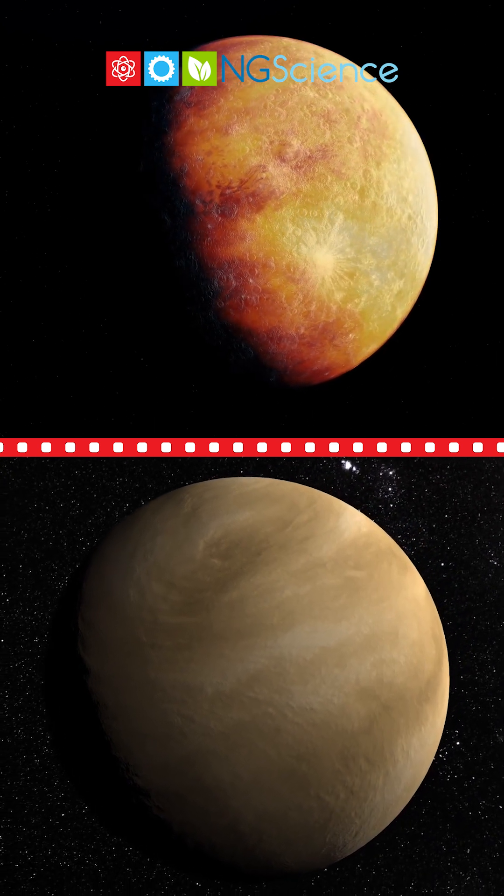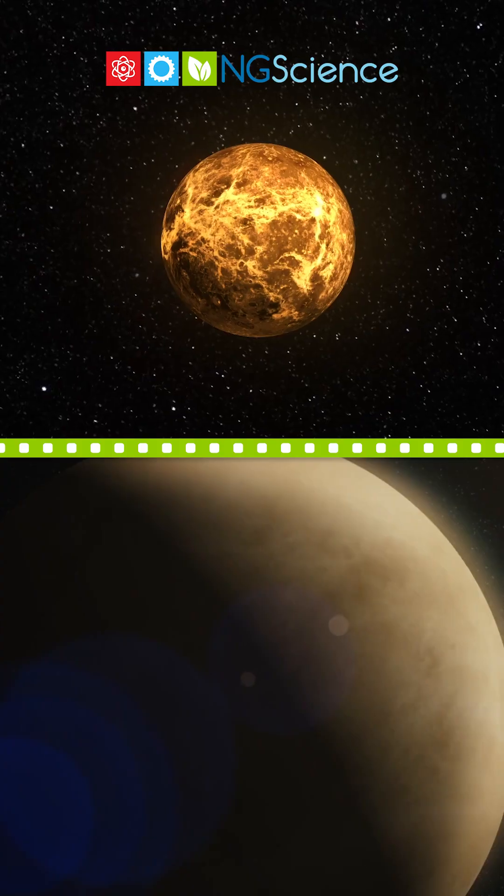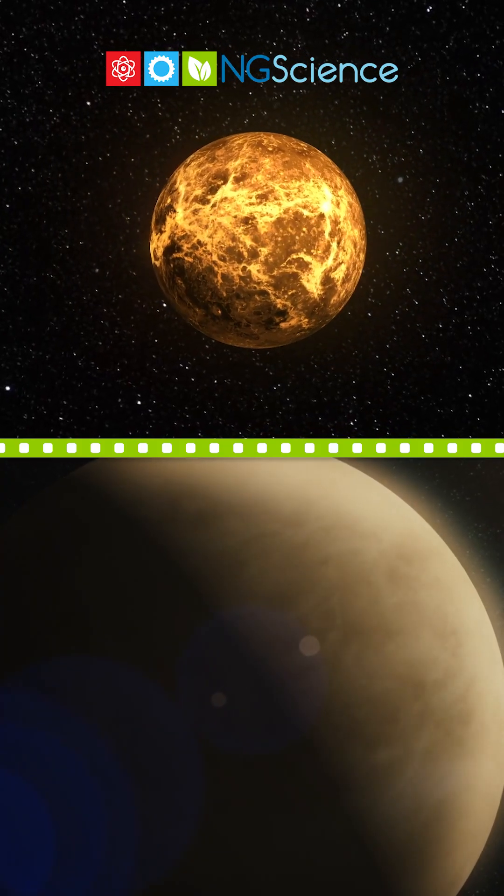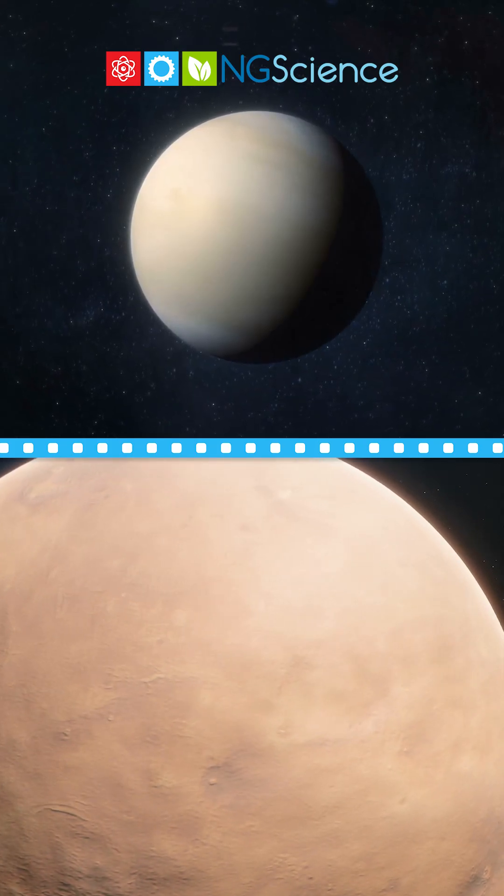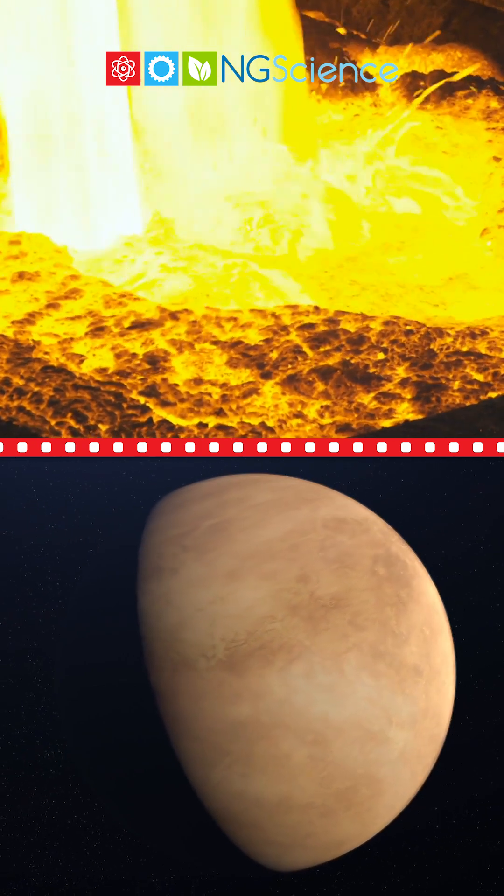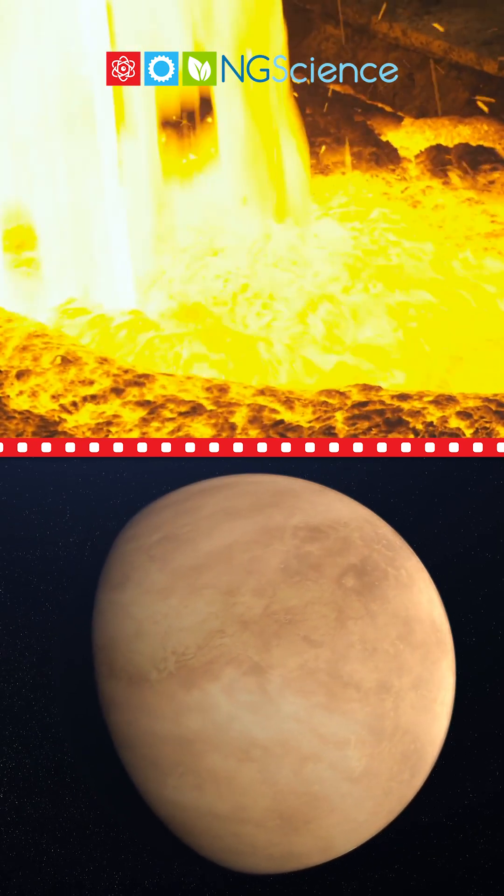Next up is Venus, the brightest planet in our sky. Venus is covered with thick, toxic clouds that trap heat, making it even hotter than Mercury. It's like a giant oven with temperatures high enough to melt metal.